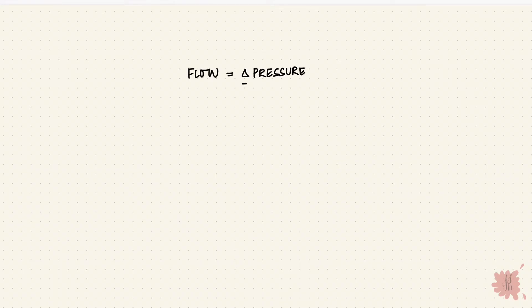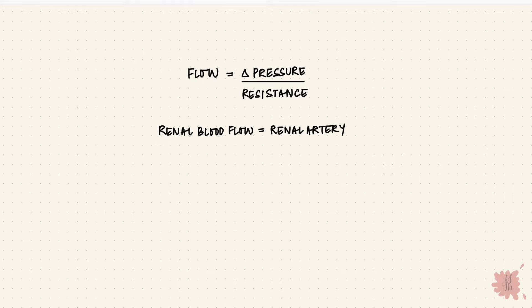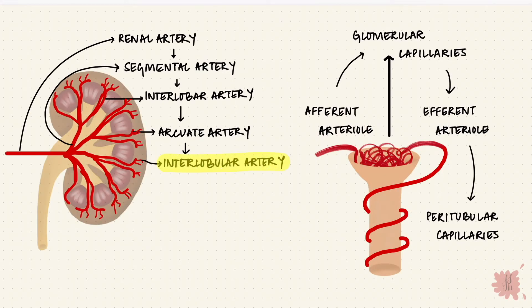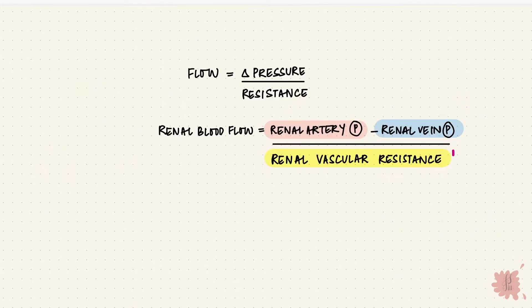The flow through the circulation is the pressure difference over the resistance. Here, the flow would be the renal blood flow; the pressure difference would be the difference between renal arterial and renal venous pressure; and the resistance would be renal vascular resistance. Of all the vessels, the small vessels like the interlobular arteries and the afferent and efferent arterioles offer the highest resistance. So that's how you can regulate flow — by increasing the resistance in these vessels, the renal blood flow would reduce.